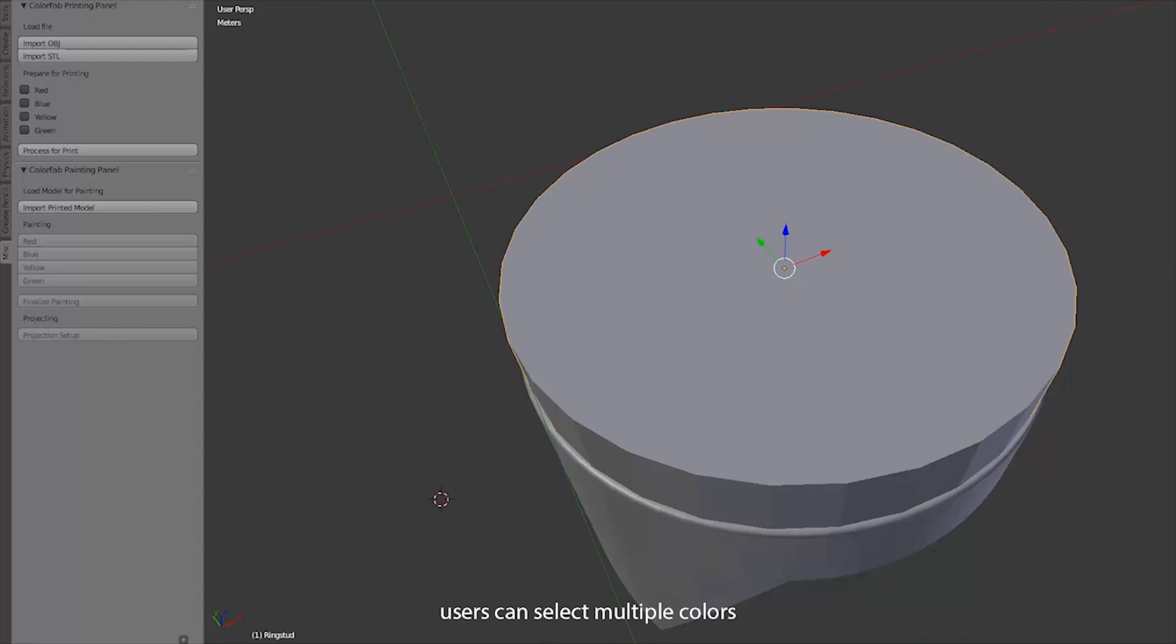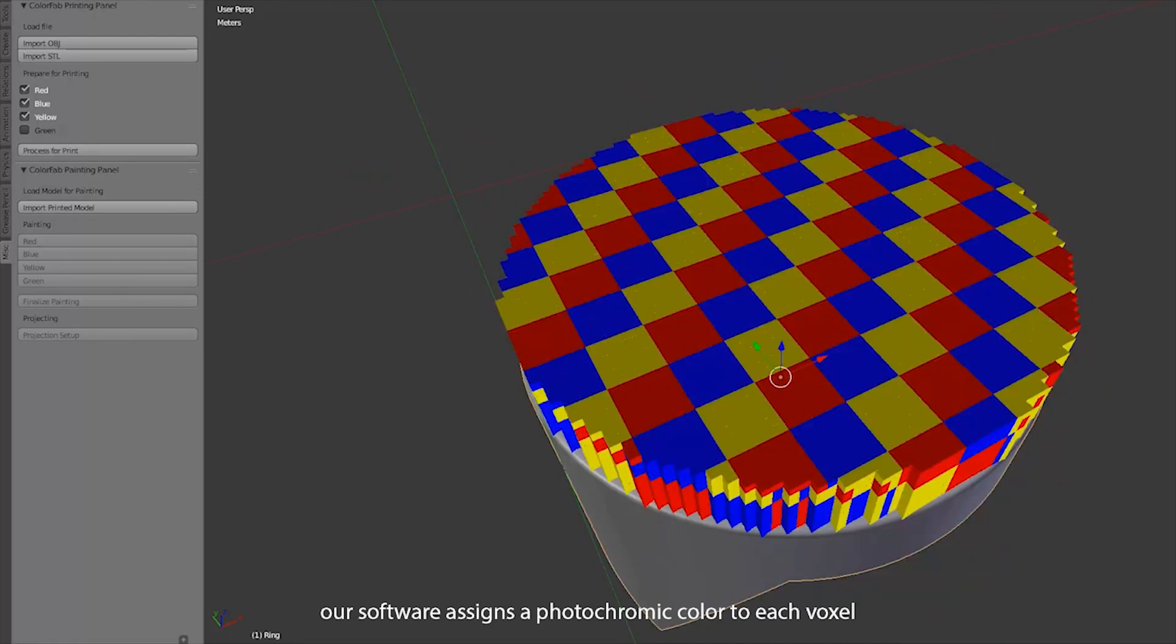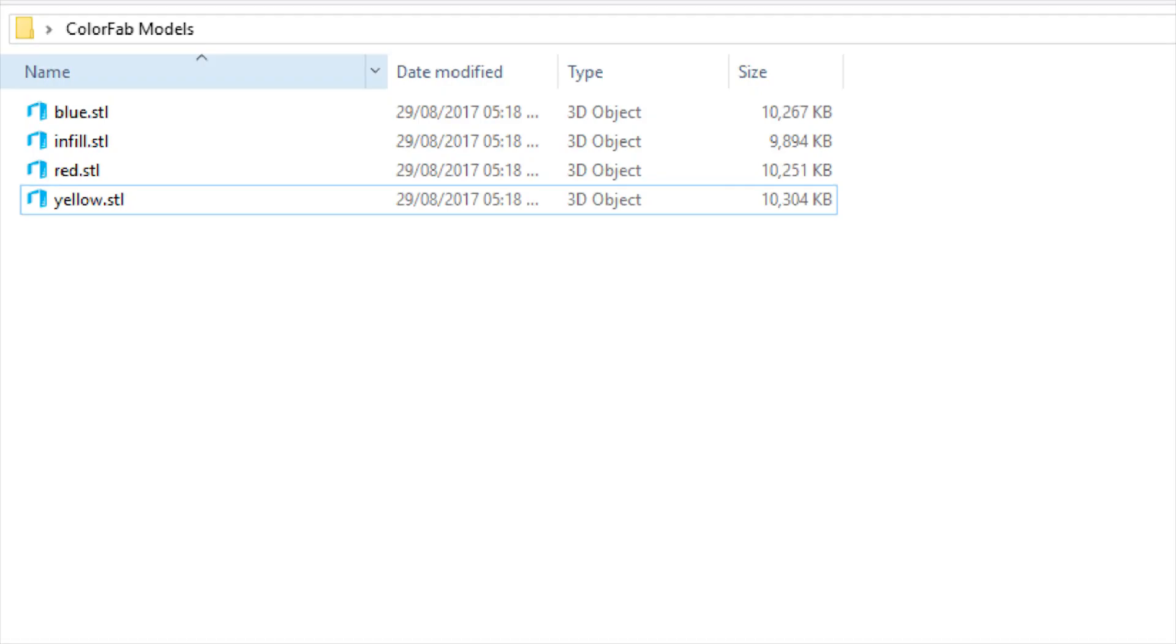Users can select multiple colors, then hit the process for print button. Our software assigns a photochromic color to each voxel and generates a set of files for 3D printing.